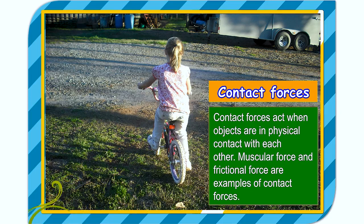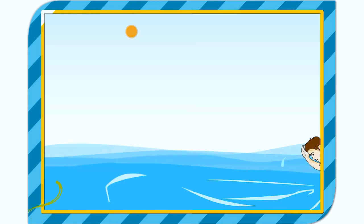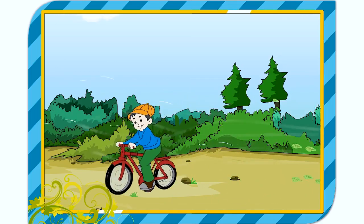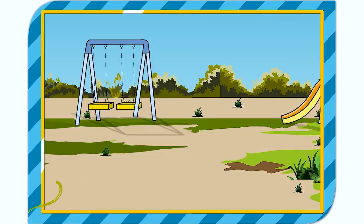Muscular force and frictional force are examples of contact forces. Muscular force is a force you apply by using the muscles of the body. For example, you use muscular force to swim and ride a bicycle. Frictional force is a force that opposes the motion of one body over another. For example, a rolling ball on a road gradually slows down and finally stops due to the force of friction.